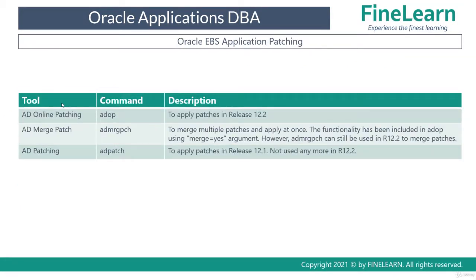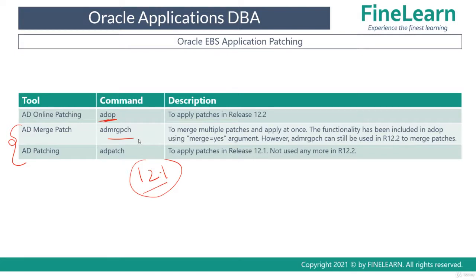So what are the different tools related to application tier patching, or basically eBusiness Suite patching? Previously there were only two important tools: adpatch and admerge patch. Remember, these two are only for version 12.1. For 12.2, ADOP has the capability to not only apply patches but also merge them. Although admerge patch can also be used with 12.2, it is not required anymore. The important lesson here is: use adpatch and admerge patch only for 12.1. From 12.2, we use only the ADOP utility — that is the AD Online Patching utility — to apply all application tier patches.